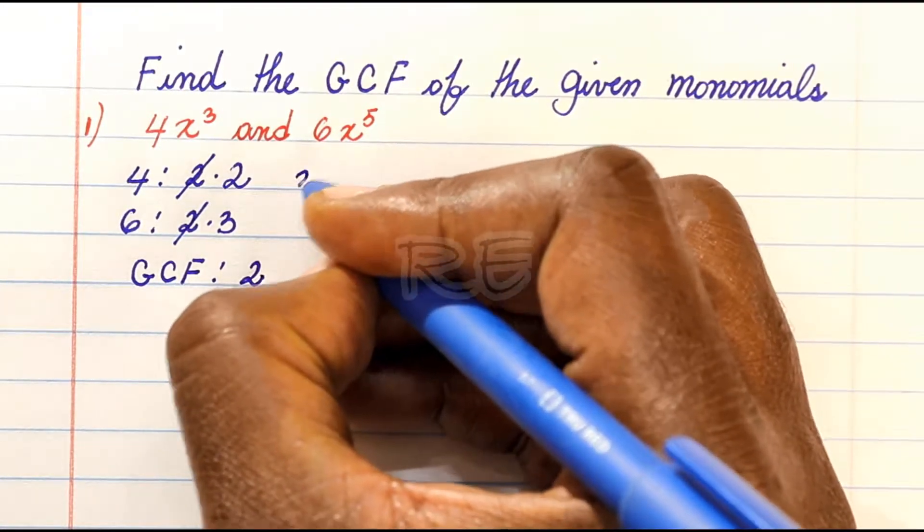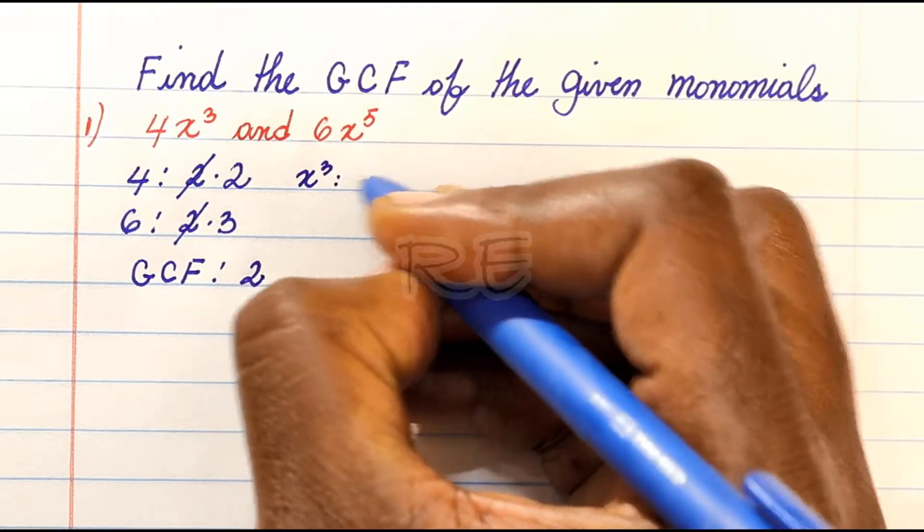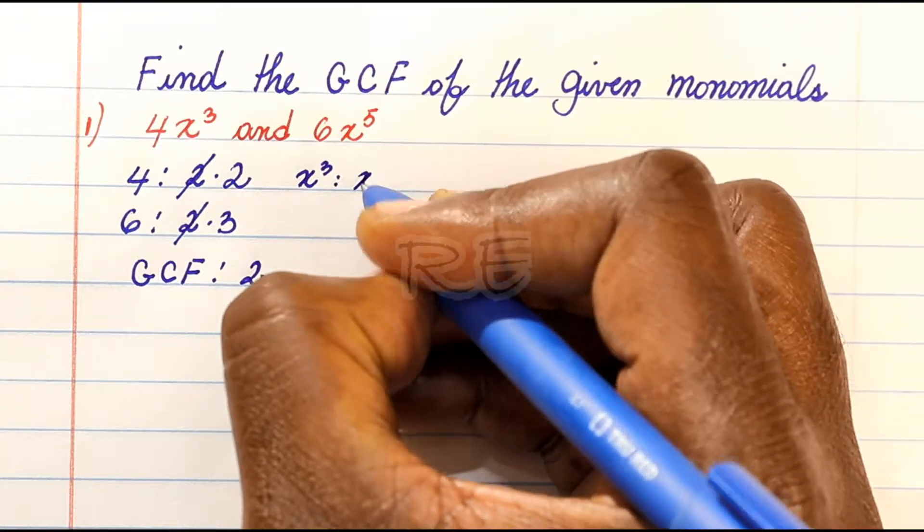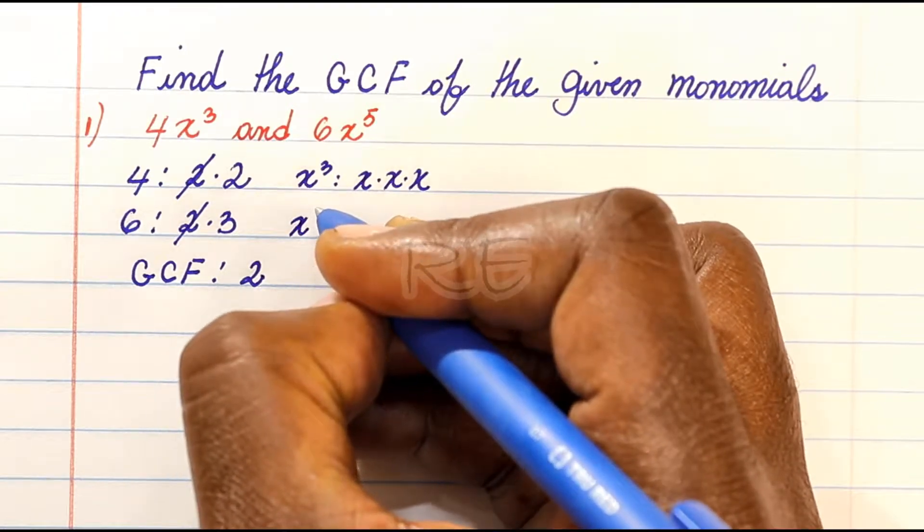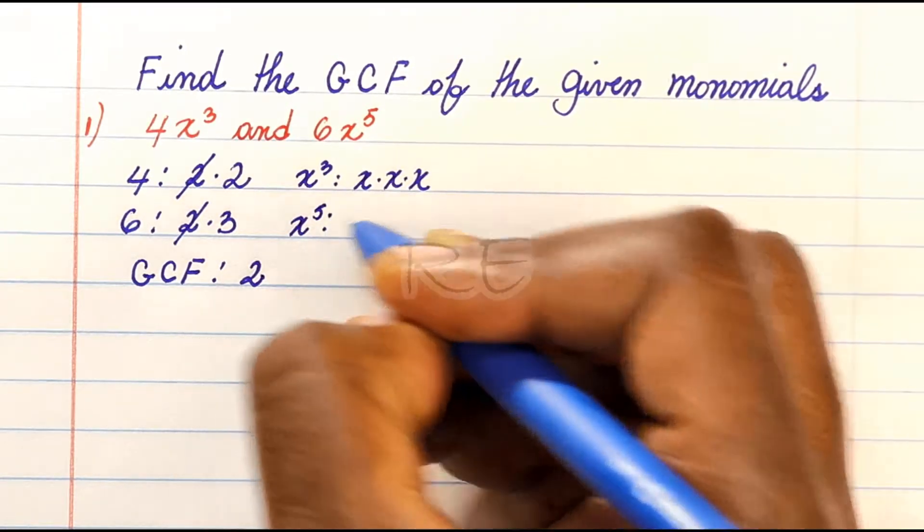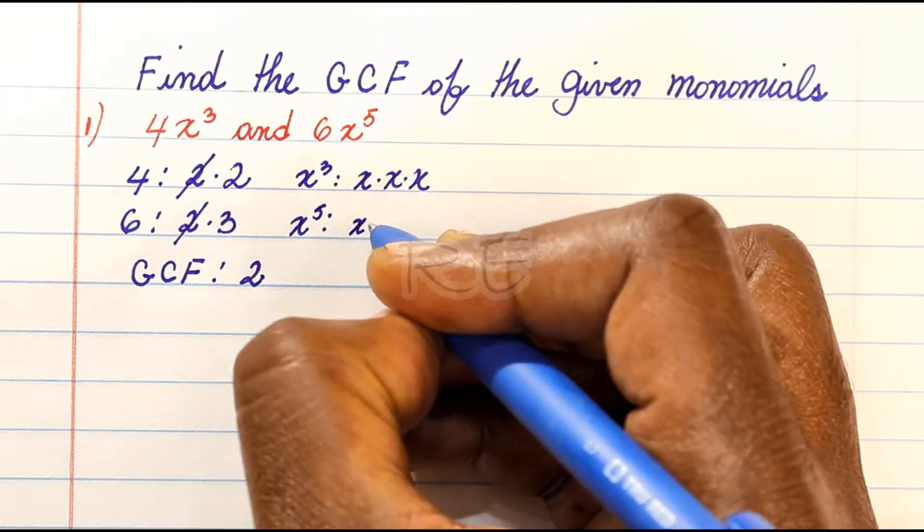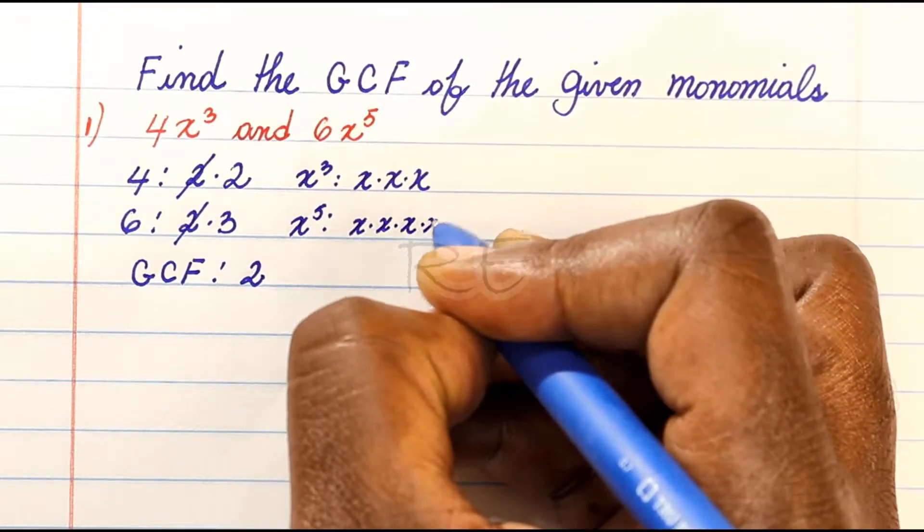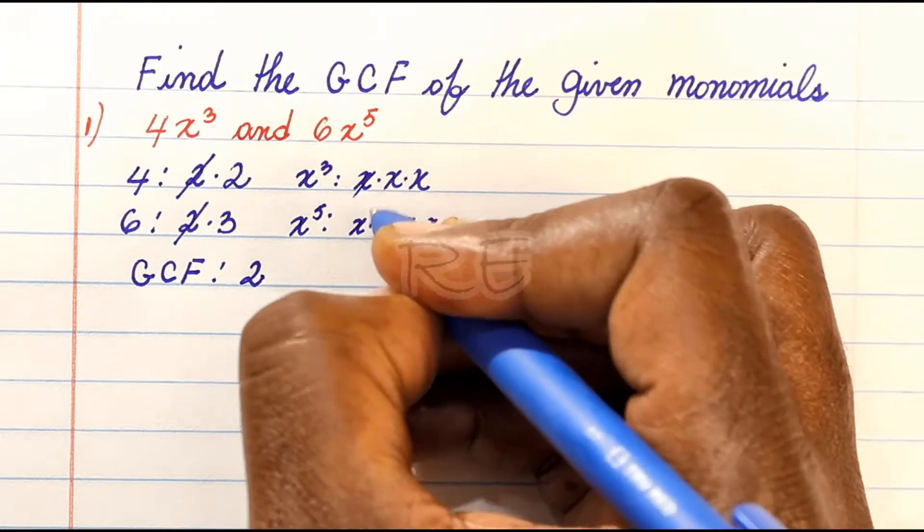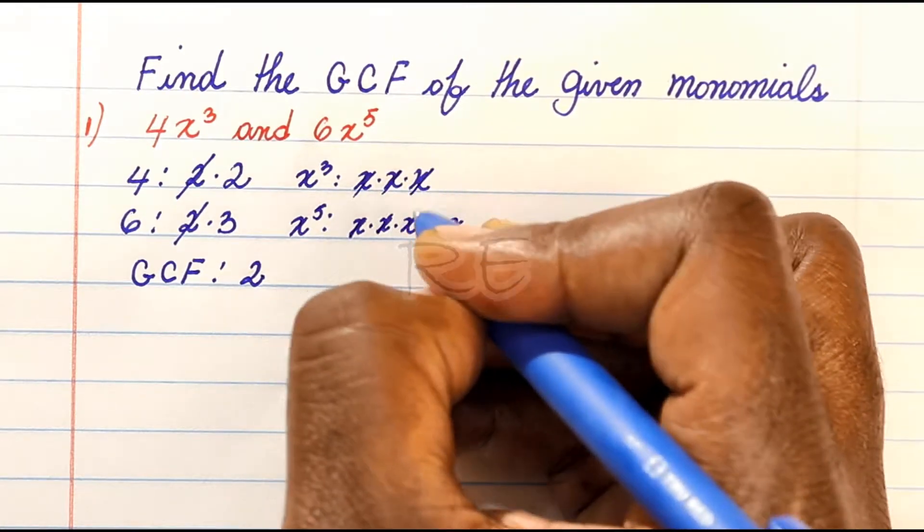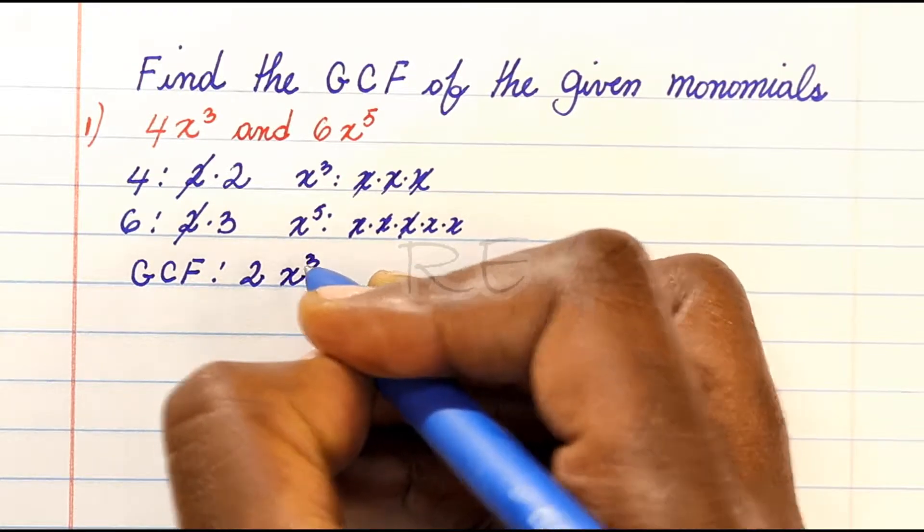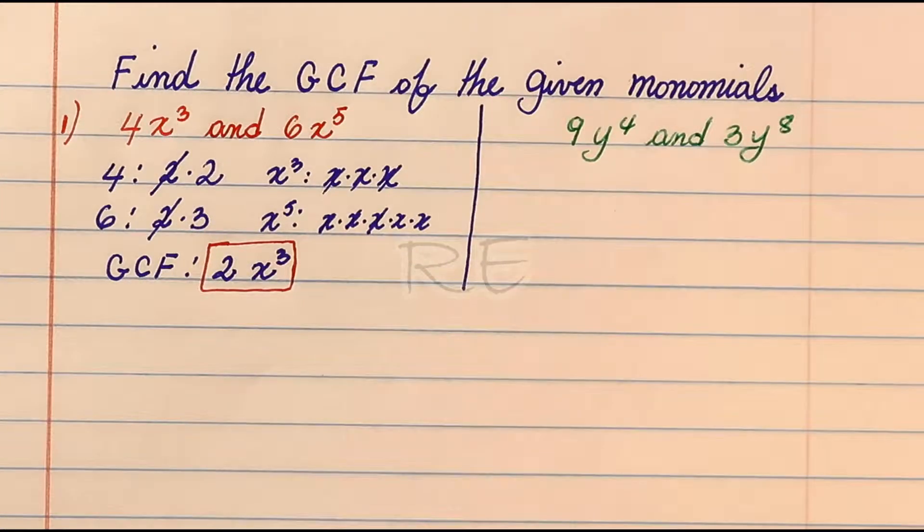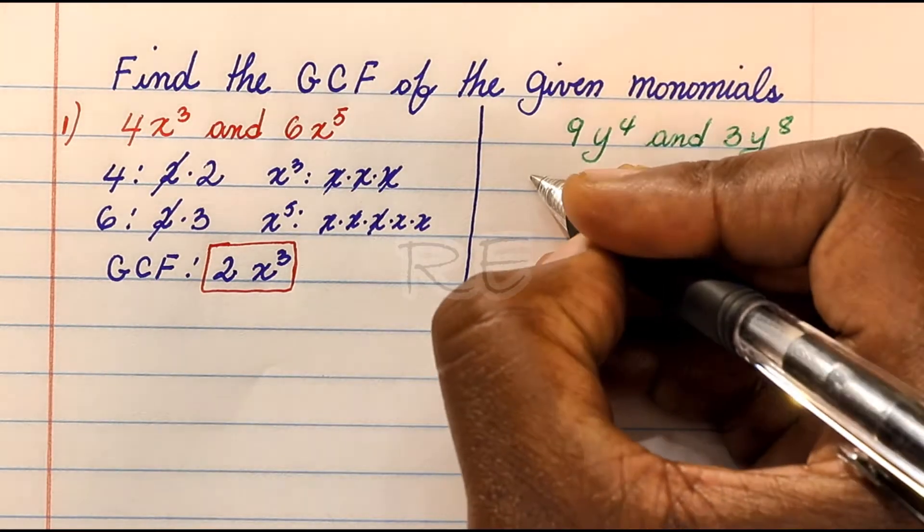Now x cubed is x times x, 3 times. And x to the fifth is x times x, 5 times. The lesser of the exponents is x cubed, and x cubed is the GCF. So the GCF is 2x cubed.